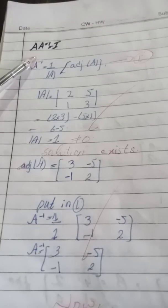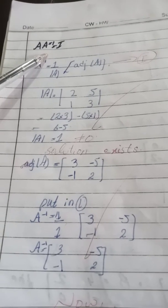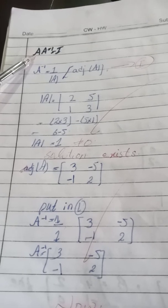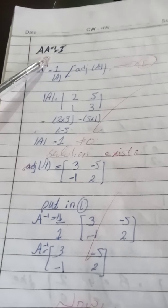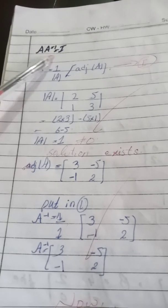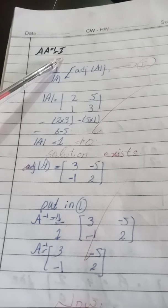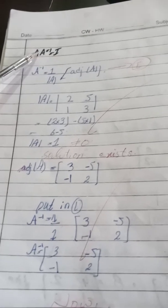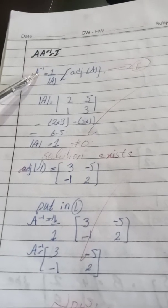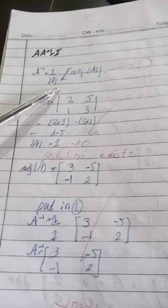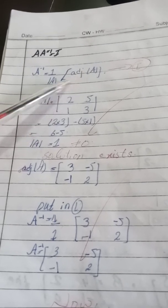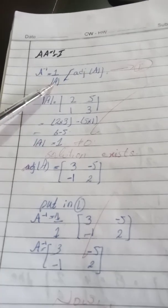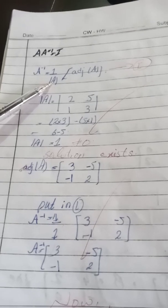Now we will solve this question and prove the result. The product of matrix A and the multiplicative inverse of matrix A equals to I, where I is the identity matrix. As we know, the multiplicative inverse of matrix A is given by the adjoint of A divided by the determinant of A.